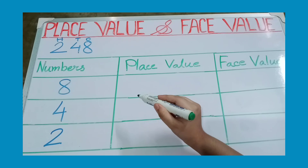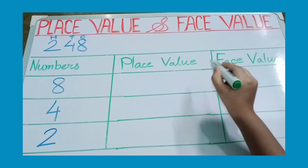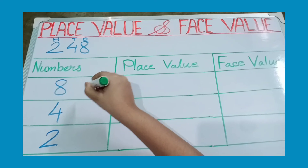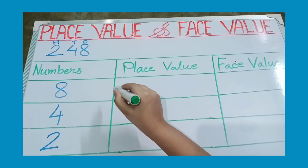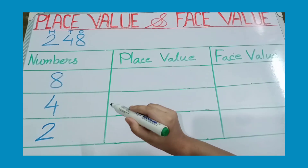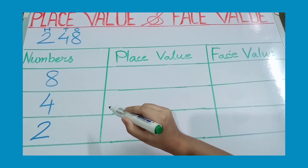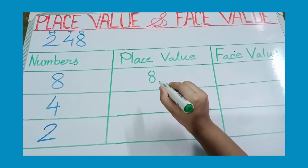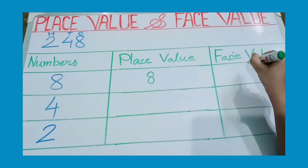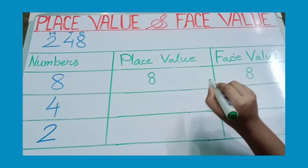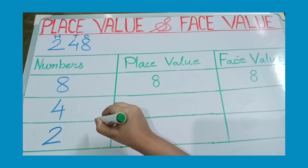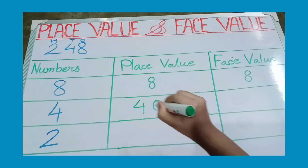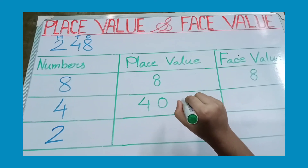Let us find out the place value and face value of each digit in the number 248. Let us find out 8 first. To find out the place value, we find which place the digit is in — it is in the 1's place. So, the place value of 8 is 8. The face value of 8 is also 8. Now, the place value of 4 is 4 tens — that means 40. And the face value of 4 is the number itself — that means 4.